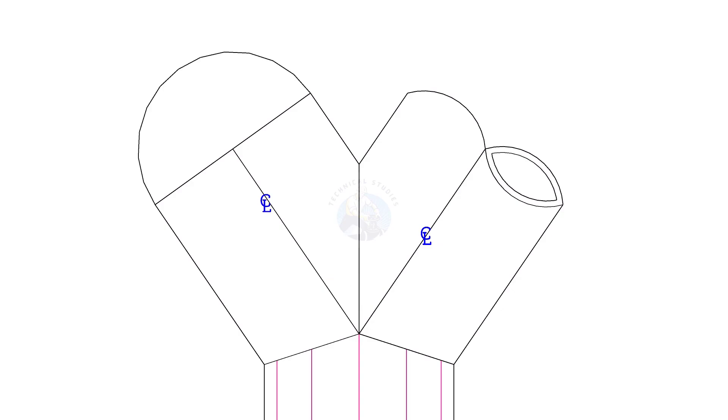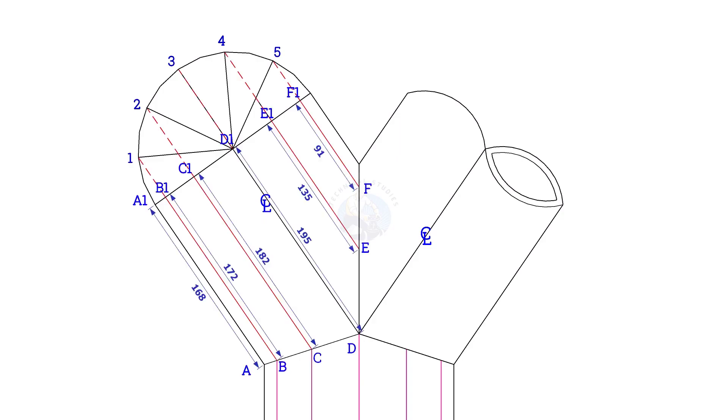To lay out the true length of the branches, the process is the same. Draw a half circle and divide it into six parts. Draw perpendicular lines as shown.